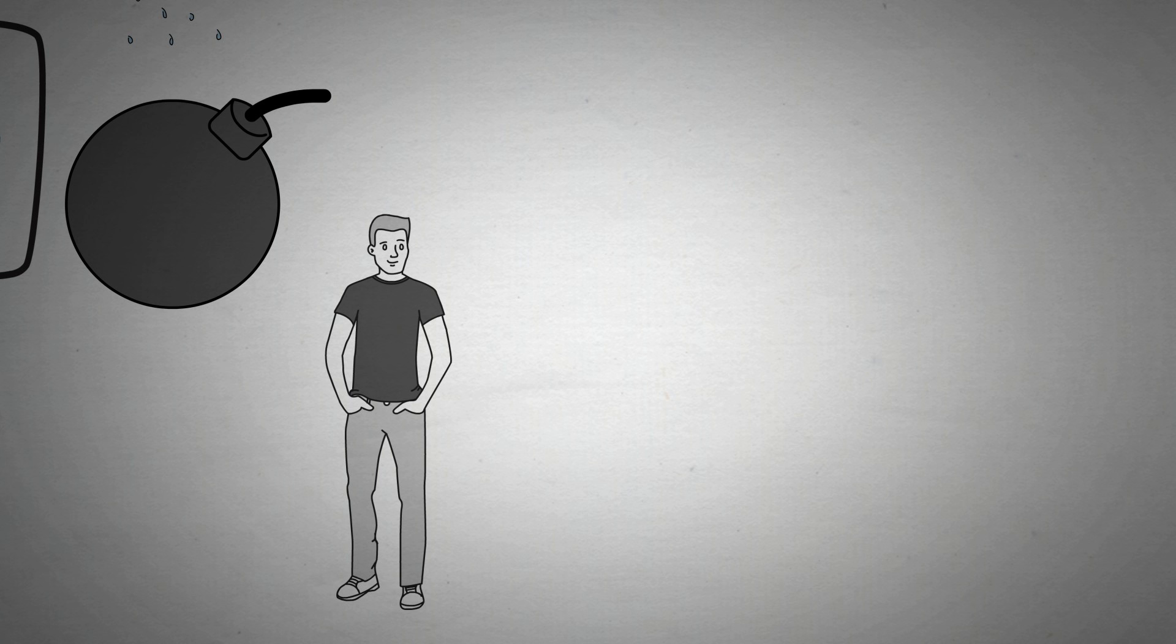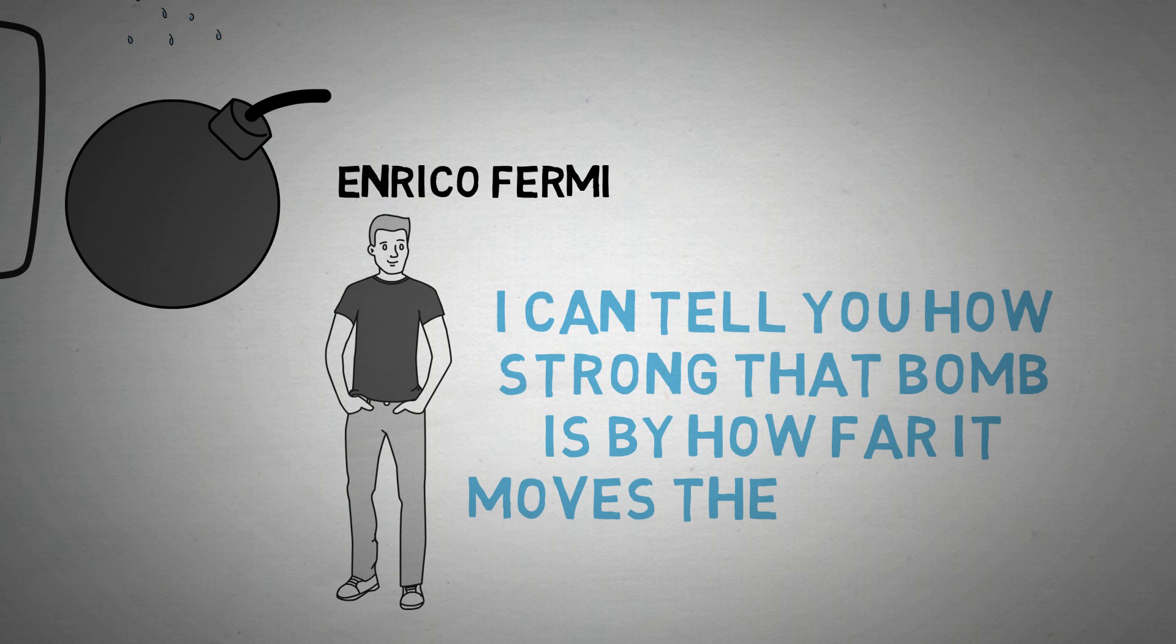The first concept I'd like to go over has to do with Enrico Fermi. Enrico Fermi was the guy who estimated the strength of an atomic bomb simply by measuring how far the pieces of paper he dropped flew after the blast. This was an amazing experiment.